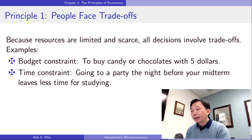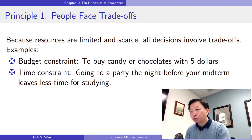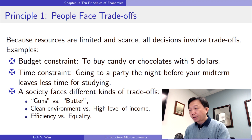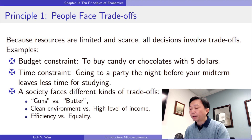When we look at firms, they must allocate inputs and resources efficiently as well. For the whole society, it also faces scarce resources. Society has to decide what jobs have to be done, how many goods and services we should produce, and how the goods are distributed.